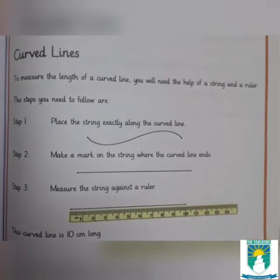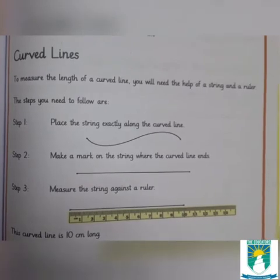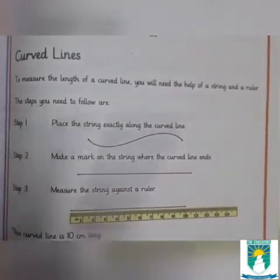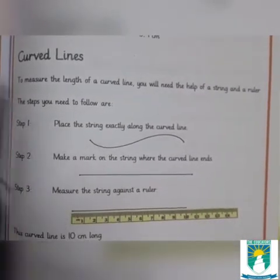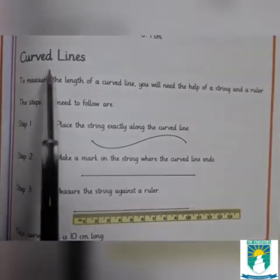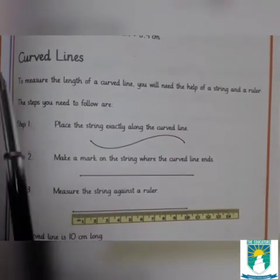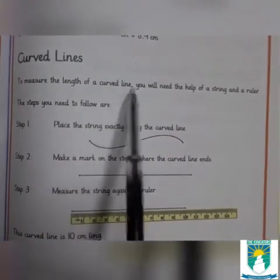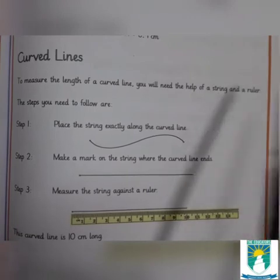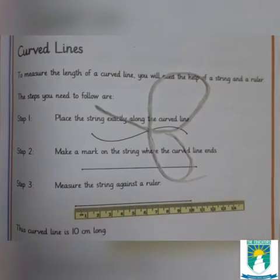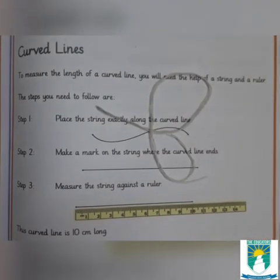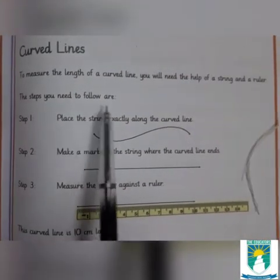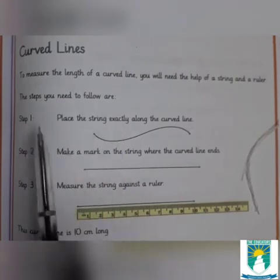In exercise number 1, we learned how to measure a simple line. But in exercise number 3, we will learn to measure a curved line. To measure the length of a curved line, you will need the help of a string and a ruler. The steps you need to follow are as below.